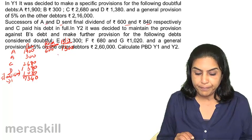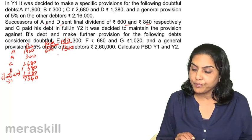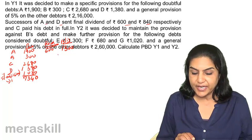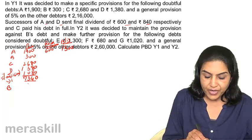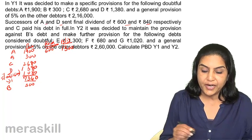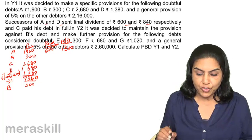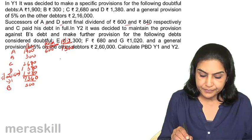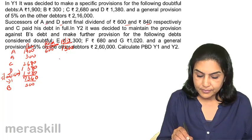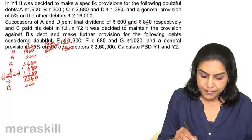In case of B, it was decided to maintain the provision against B's debt, so provision of 300 is continued. C paid his debt in full — C paid 2,680, so the provision for C is no longer needed.